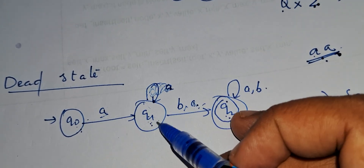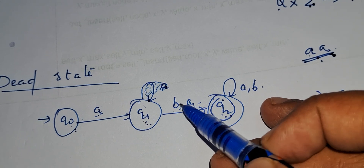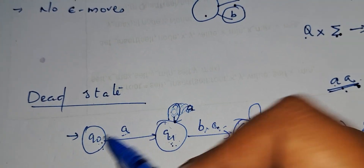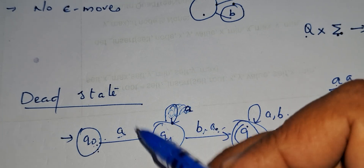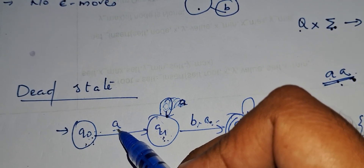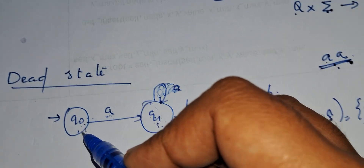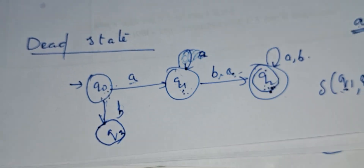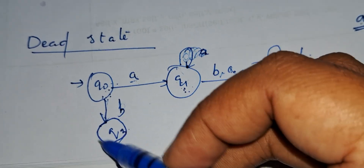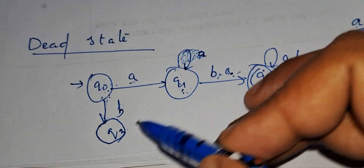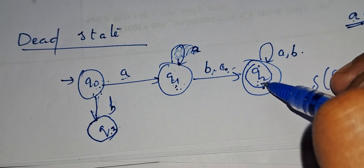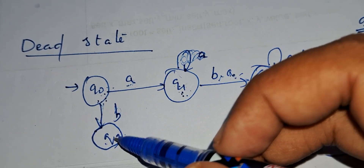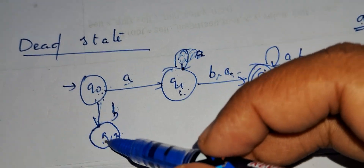In a DFA, when taking each and every state you need to show the transition on all input symbols. Q0 — show transition on 'a', but you didn't show transition on 'b'. If you are not able to show the transition, just draw the transition to a dead state. A dead state is a state from which we cannot reach the final state. For example, Q3 — there is no movement from Q3 to Q2, so Q3 is a dead state. Dead state is a state from which we can't reach the final state.